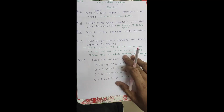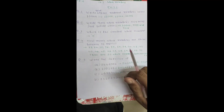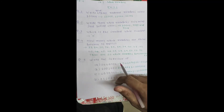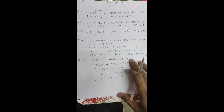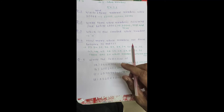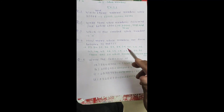Which is the smallest whole number? The answer is 0. Question number 4: how many whole numbers are there between 32 and 53?